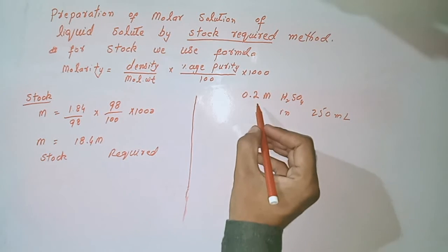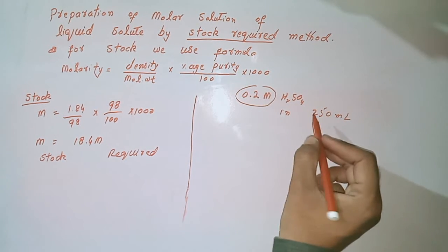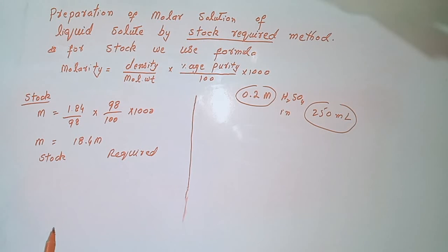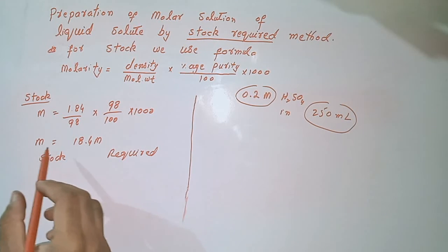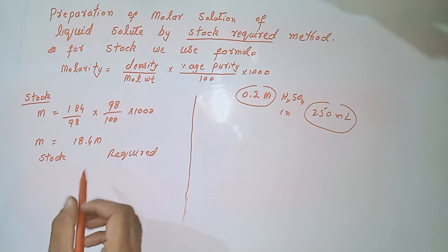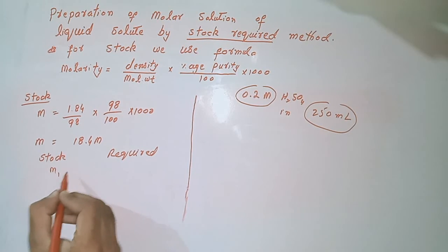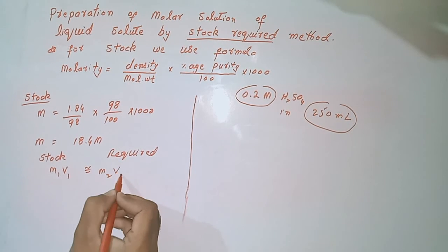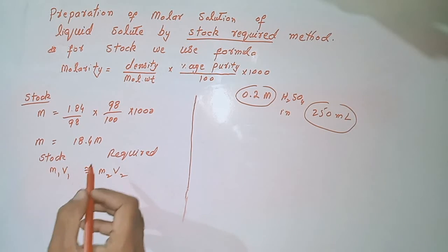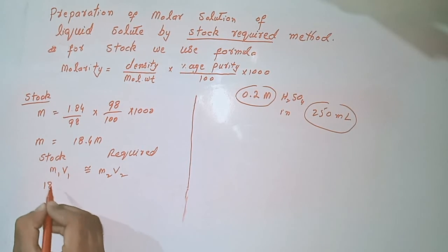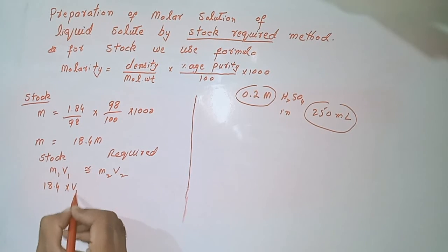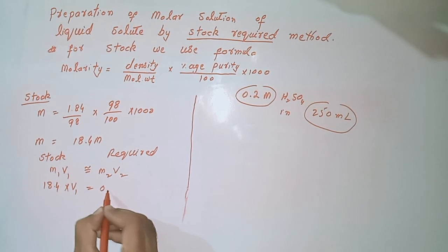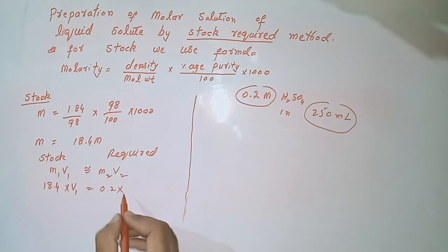If we want to make 0.2 molar H₂SO₄ solution in a 250 ml flask, we use the stock molarity of H₂SO₄ which is 18.4 molar. We apply the formula M₁V₁ = M₂V₂: 18.4 multiplied by V₁ equals M₂. The required molarity is 0.2 and the required volume is 250 ml.